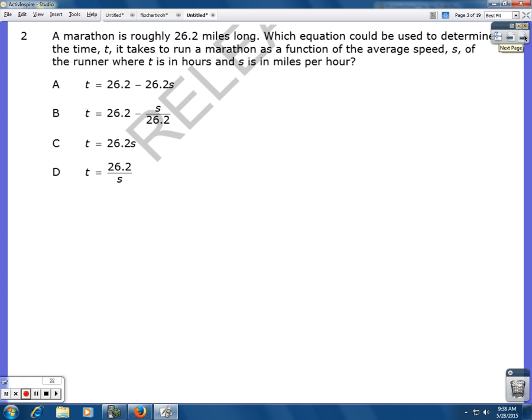For our second one, a marathon is roughly 26.2 miles long. Which equation could be used to determine the time t it takes to run a marathon as a function of the average speed s of the runner where t is in hours and s is in miles per hour?